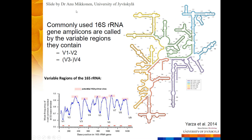This slide is also by Anu. This example is from the 16S ribosomal RNA gene. The amplicons are named by the variable regions they contain. On the x-axis you have the base position in the 16S ribosomal RNA gene, and on the y-axis you have how conserved the bases are. You can see regions which are very highly conserved, and between them there are very variable regions. When we do amplicon sequencing, we design our primers to these conserved sites so that we can amplify the variable region.